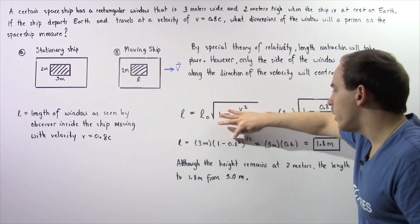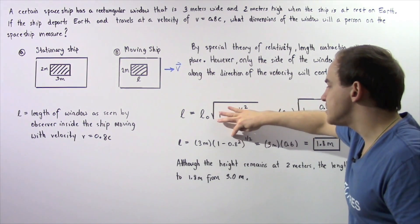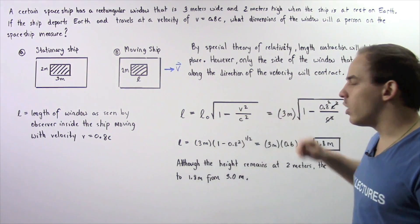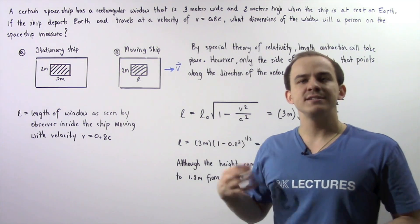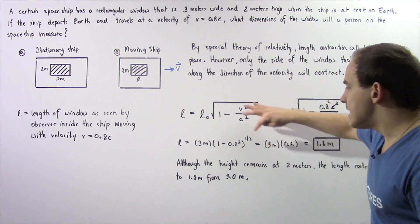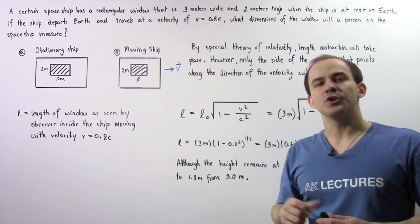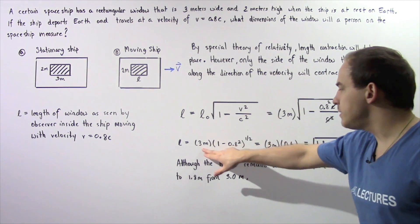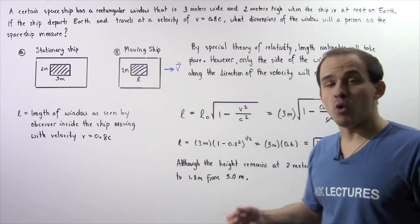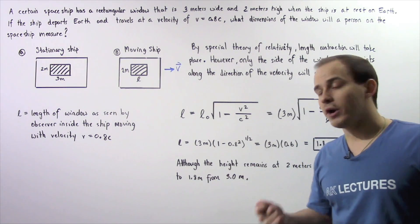So 1 minus 0.8 squared is 1 minus 0.64, and 1 minus 0.64 is 0.36. Now the square root of 0.36 is 0.6. So 3 meters multiplied by 0.6 gives us 1.8.